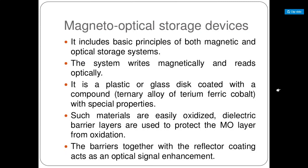To write on this device, it uses the magnetic disk system or rules, and to read it uses the technique of an optical disk. Basically it is a plastic or glass disk coated with a compound — technically a ternary alloy of terbium, ferric cobalt — with special properties. These materials are easily oxidized, meaning when exposed to oxygen or natural air, their physical and chemical properties change.